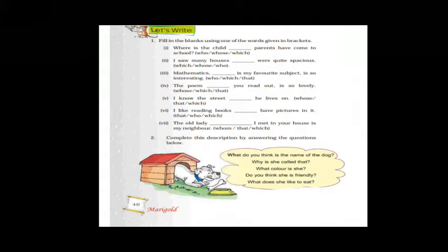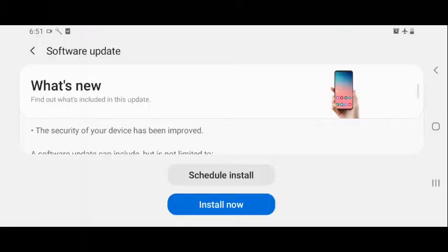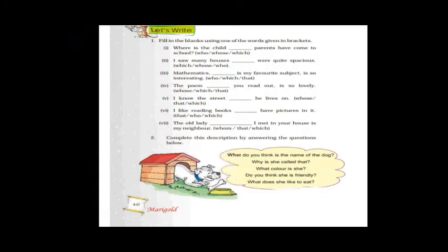Moving to the next section — fill in the blanks using one of the words given in the bracket. The words are 'which,' 'whom,' and 'that.' Examples: 'Where is the child whose parents have come to school?' — whose. 'I saw many houses that were quite spacious.' 'Mathematics, which is my favorite subject, is so interesting.' 'The poem that you read out is so lovely.' 'I know the street which he lives on.' 'I like reading books that have pictures.' 'The old lady whom I met in her house is my neighbor.'